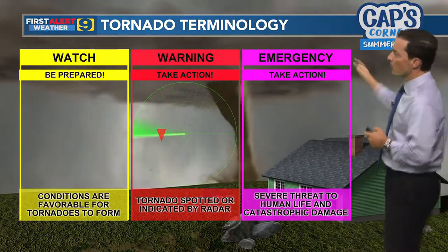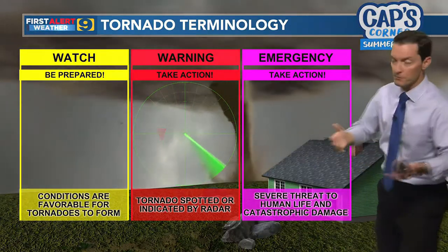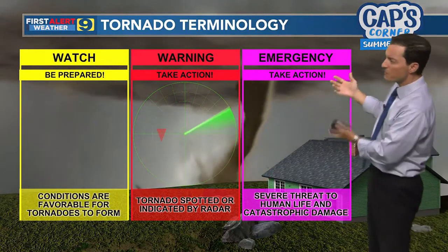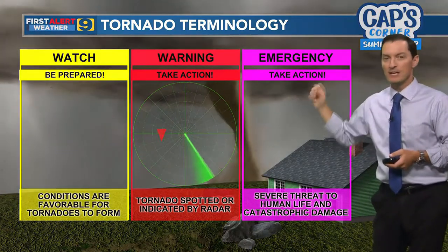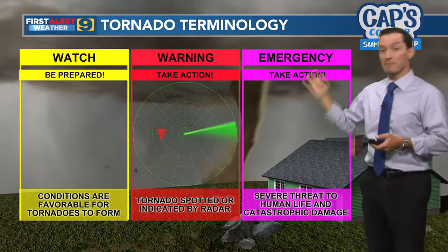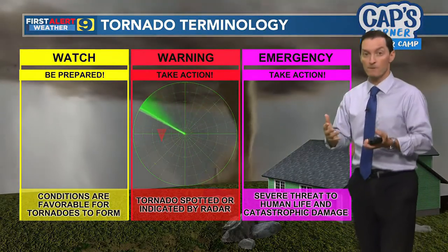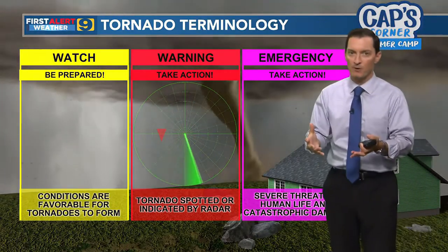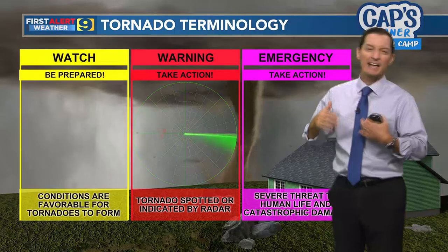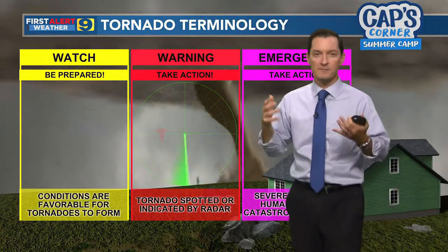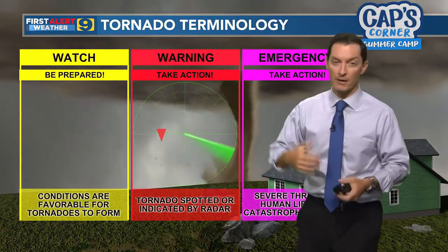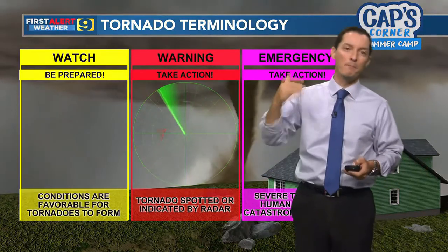An even more significant alert level is a tornado emergency. Tornado emergencies are reserved for when we know there's a tornado on the ground, and typically it's a really strong tornado or it's moving through an area with a lot of people. So that's the most severe alert level when it comes to tornadoes.